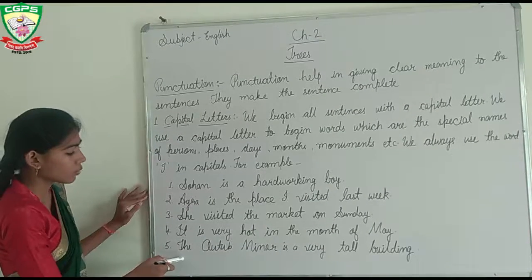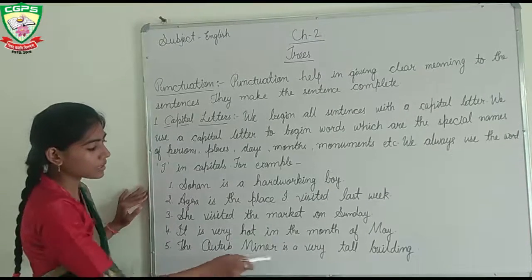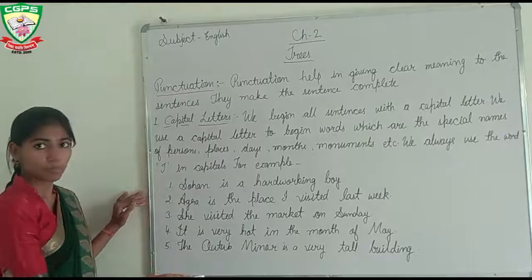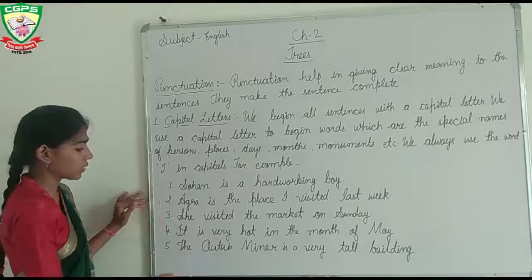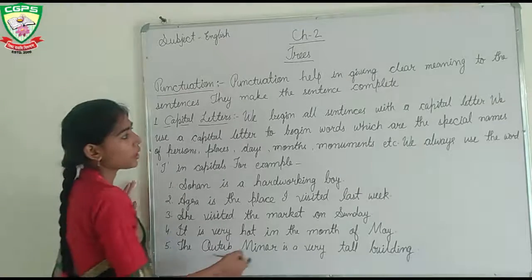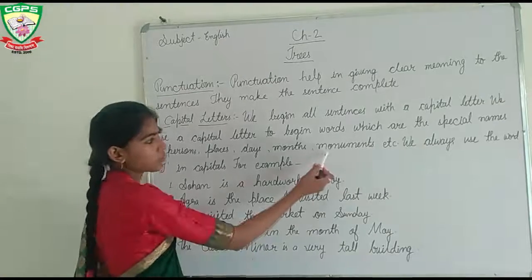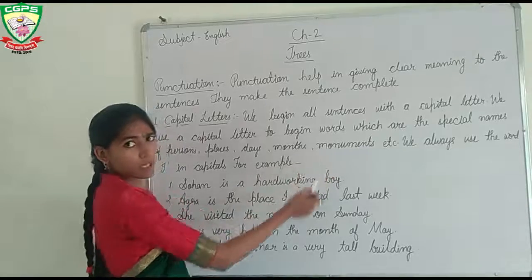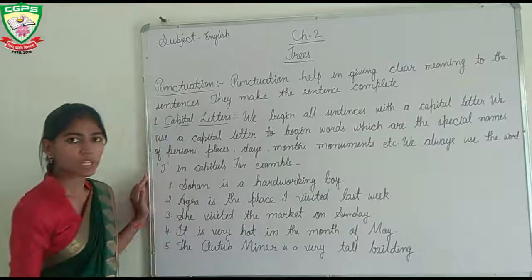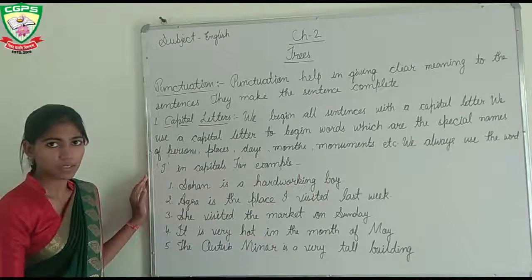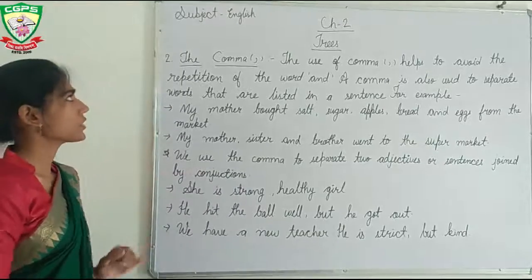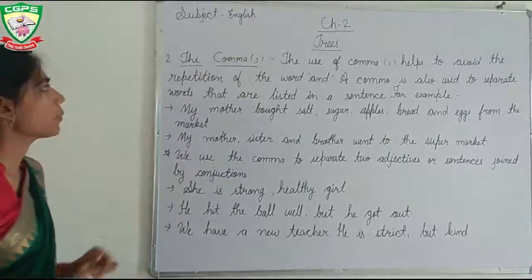Next example: 'The Qutub Minar is a very tall building.' Qutub Minar is also a proper noun because it is a monument's name. So Qutub Minar is written with a capital letter. That concludes our discussion on capital letters. Our second punctuation mark is the comma.